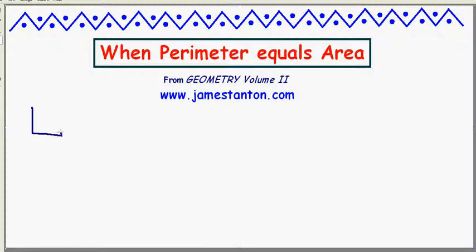Welcome! Have you noticed if you draw a 4 by 4 square that the area of the square is 16 and the perimeter of the square is also 4 plus 4 plus 4 plus 4, 16. They have the same numerical value.